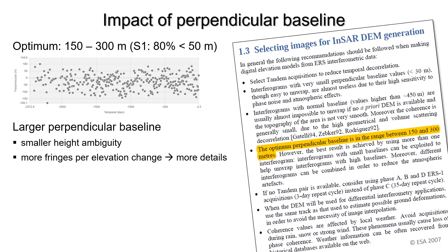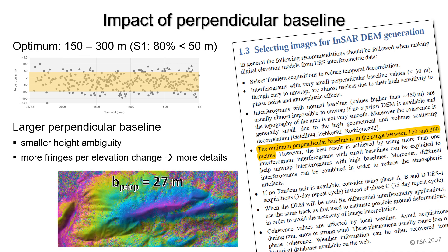While the effect of temporal decorrelation is widely understood, the impact of the perpendicular baseline is widely neglected in many Sentinel-1 studies. An ideal perpendicular baseline of above 150 meters is recommended for DEM generation. However, most Sentinel-1 image pairs have perpendicular baselines below 50 meters, leading to a small height ambiguity and less pronounced fringes.